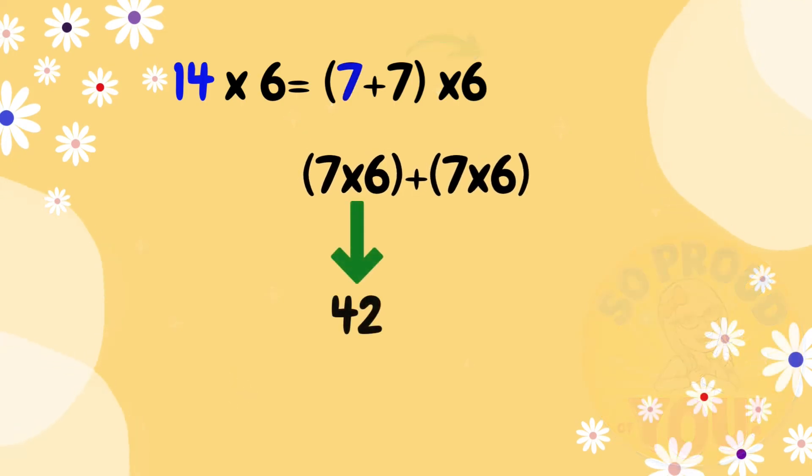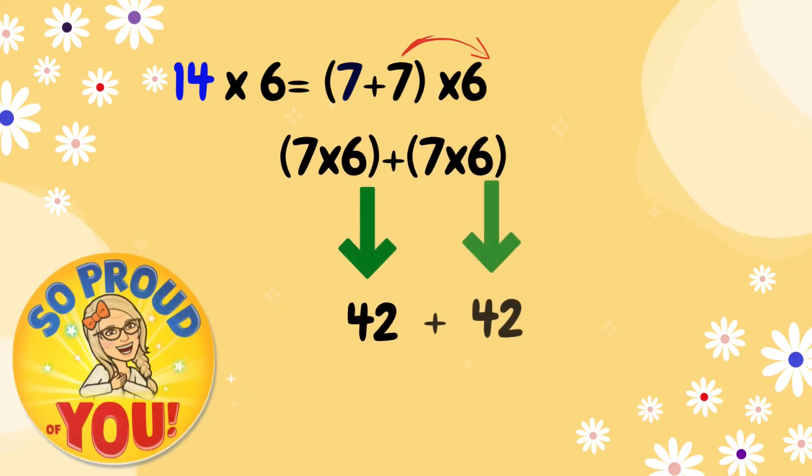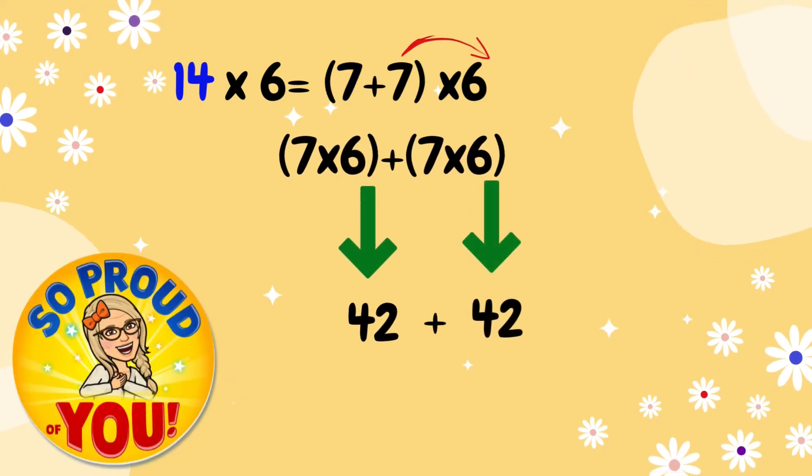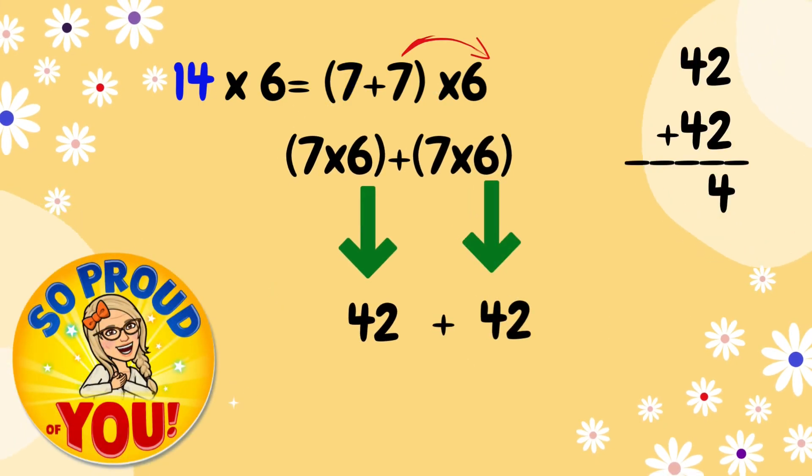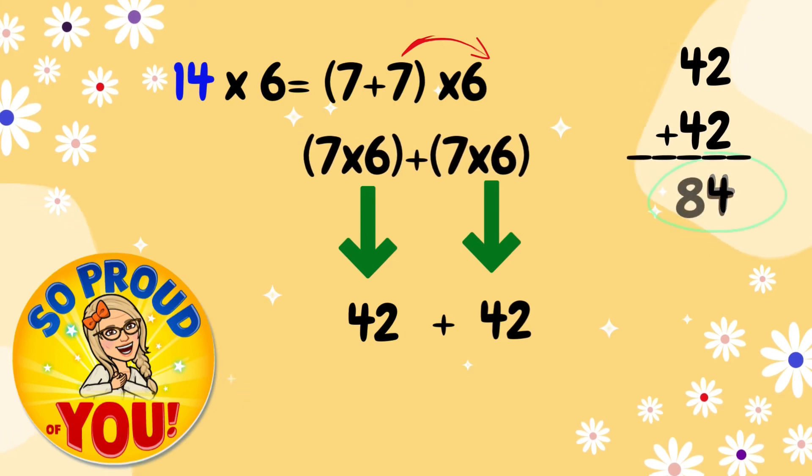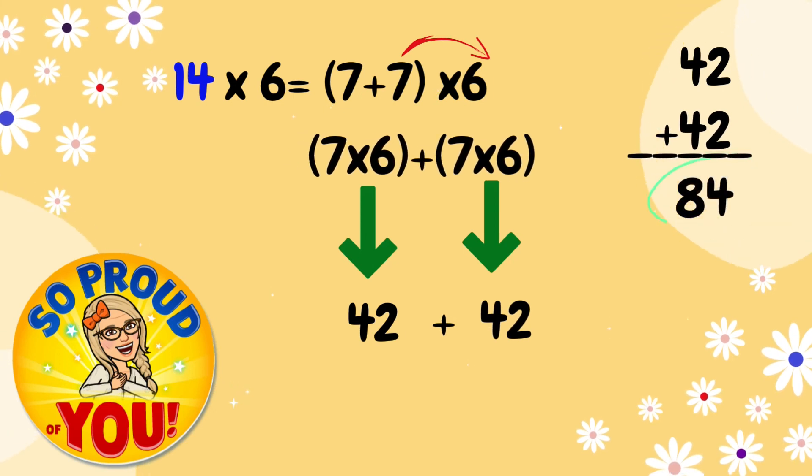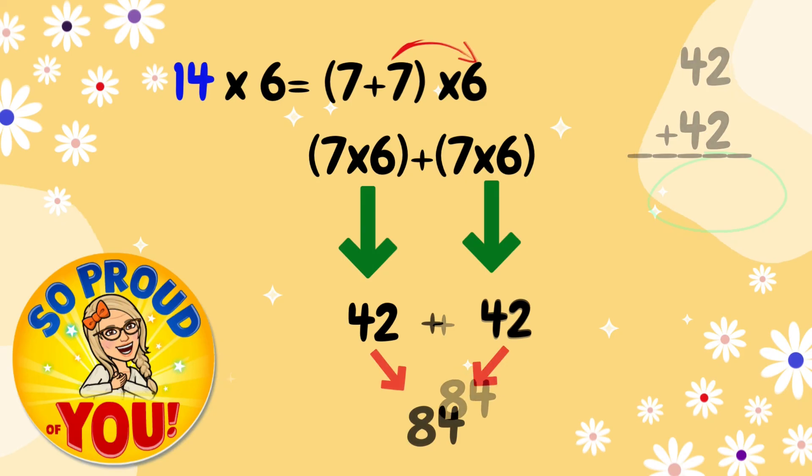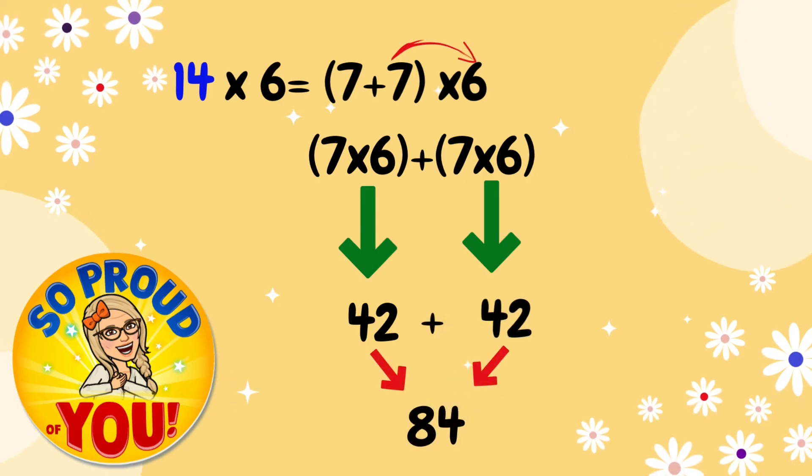Now, we multiply 7 times 6, which equals 42. And in this case, we don't even need to multiply the other multiplication sentence because it's the same. We just double 42. 42 plus 42. 2 plus 2, 4. 4 plus 4, 8. So, the answer is 84. Again, because each way we use, we're going to get 84 in this multiplication equation.